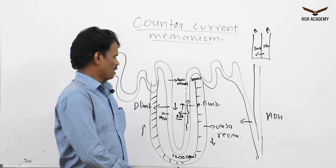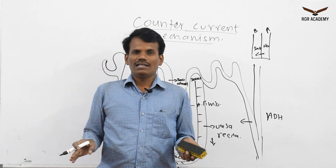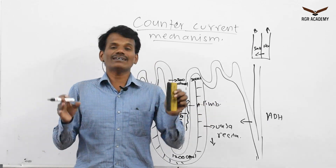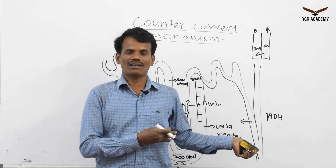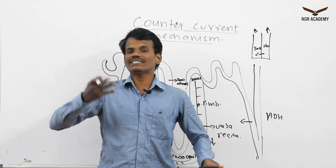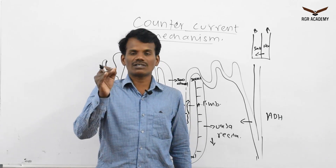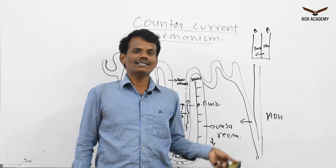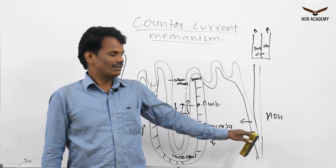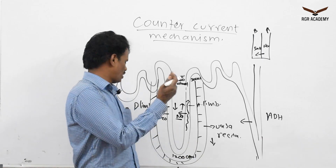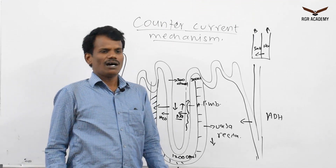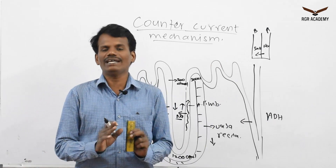Water keeps entering until equilibrium state. The purpose of counter current mechanism is to increase the water level of the body when it requires. If the body requires water, this mechanism works effectively, bringing water from the collecting duct into the blood vessel. The blood will then be diluted or returned to normal level and transported throughout the body.